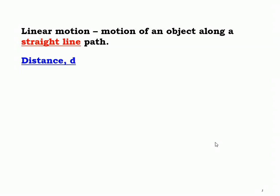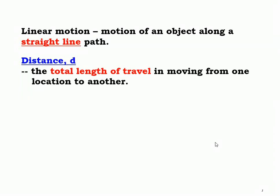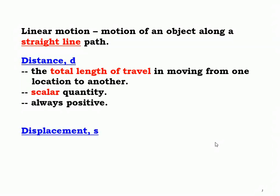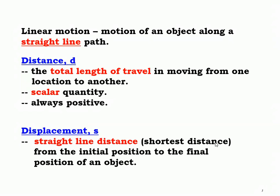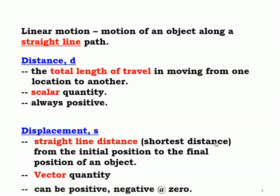The first thing we need to know is distance, d. The definition of distance is the total length of travel in moving from one location to another. It is a scalar quantity and it is always a positive value. Displacement, which uses the symbol S, is the straight line distance - or the shortest distance - from the initial position to the final position of the object. Unlike distance, displacement is actually a vector quantity, and it can be positive, negative, or zero.